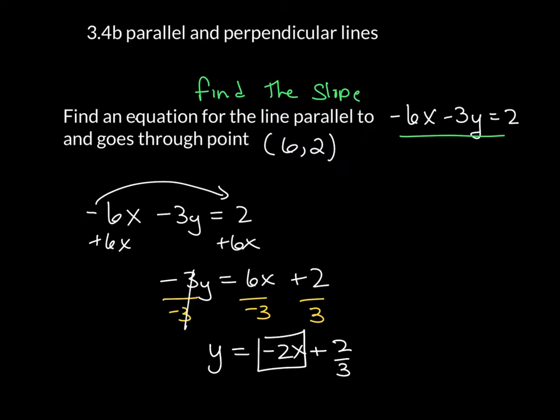But really, all we wanted here was that the slope was negative 2. So because I know what this is, I know that the slope of the line that we're looking for is equal to negative 2.